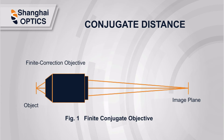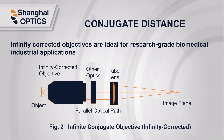Using a finite conjugate objective, as shown in Figure 1, is a good economical choice for a simple microscopy system. Infinity corrected objectives are ideal for research grade biomedical and industrial applications, especially when additional components such as filters, dichroic mirrors, or polarizers are needed. Adding optical plate components in the infinity space between the infinity-corrected objective and tube lens will not introduce spherical aberration or change the objective's working distance.